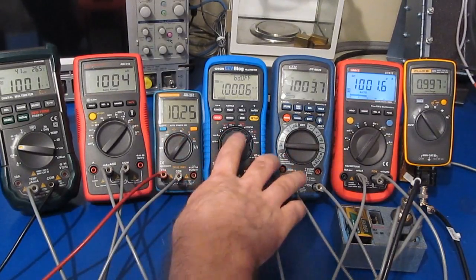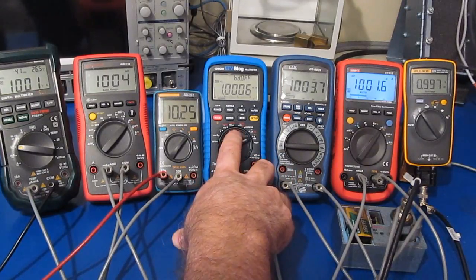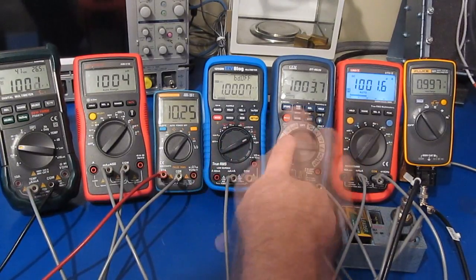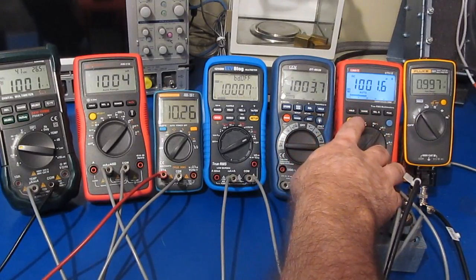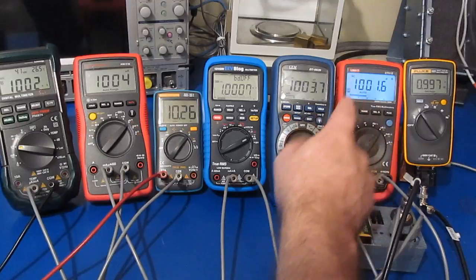Then to the right of that is the prototype 121 GW. To the right of that is my Sum DT 9939, and then we have our Unity UT 61E.